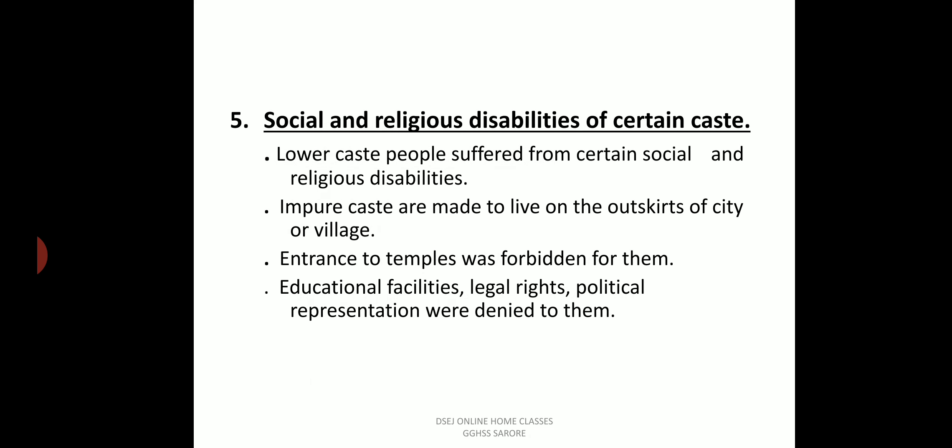The next characteristic is social and religious disabilities of certain castes. Lower caste people were discriminated against in both social and religious events. Lower caste people suffered from certain social and religious disabilities — impure castes were made to live on the outskirts of the village and were not allowed to live within the city.